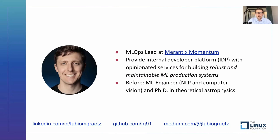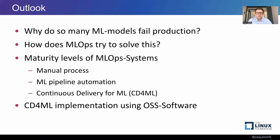And before that, I did a PhD in theoretical astrophysics. Today, I want to talk about why so many ML models fade in production and how MLOps tries to solve this. I will talk about maturity models that assess the degree of automation in ML systems, looking at a very manual process and then systems that have gradually more automation to release new models into production. Then I will explain how we at Merantix Momentum build such automated CD for ML production systems using open source software.